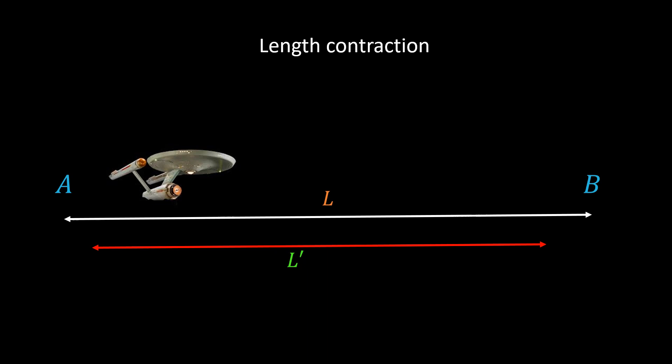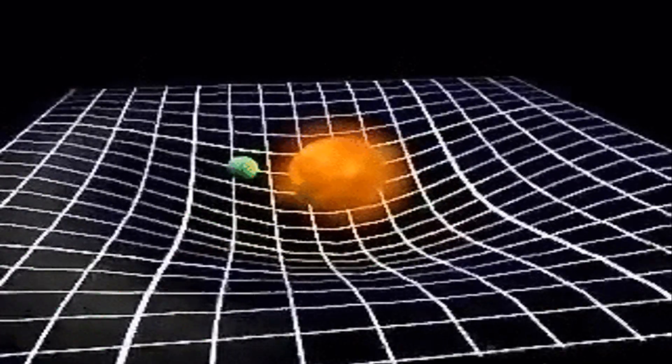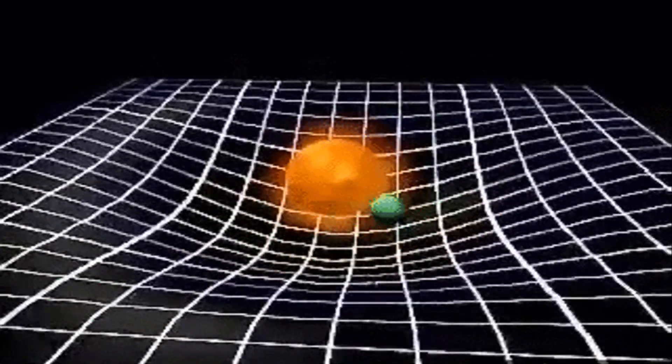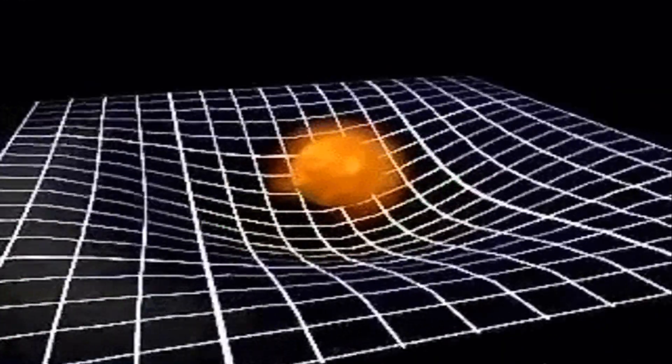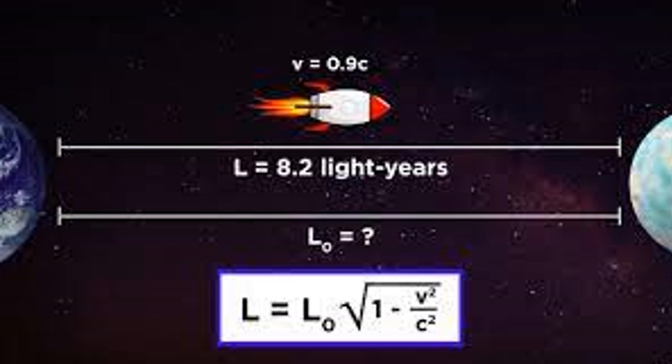According to general relativity, space is a real thing that is malleable. Now, if the space between A and B contracts, where do they get the energy to do so? Because in general relativity, mass provides that energy. If you ask your lecturer this question, he will say, no, no, no. The space in between A and B only appears to contract according to the person in the spaceship.